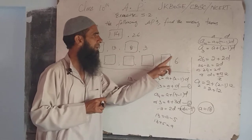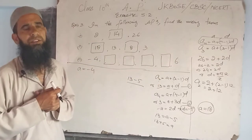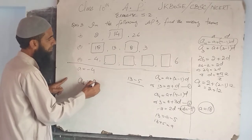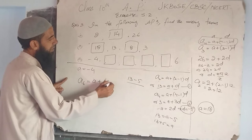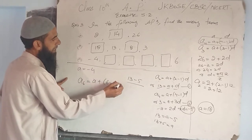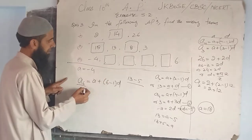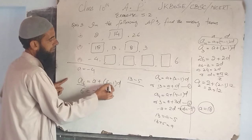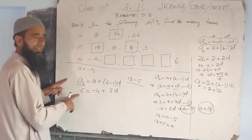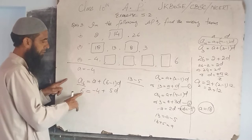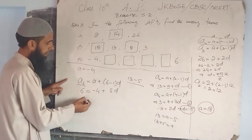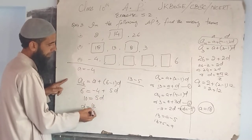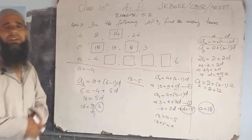fourth, sixth term we have here, that is A₆ is equal to 6. A₆ is equal to A plus N minus 1 into D, that is 6 minus 1 into D. So A₆ equals A, which is minus 4, plus 5 into D. Left side becomes 6 plus 4, that is 10, equal to 5D, or D is equal to 10 by 5. Common difference is 2.